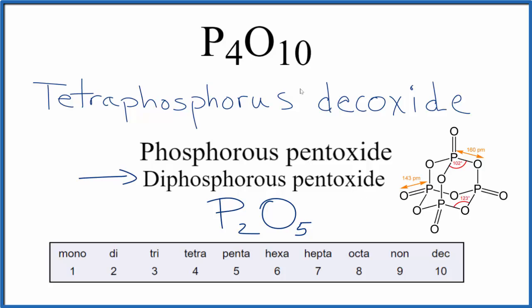Because of this historical context, you'll often hear this called phosphorus pentoxide or diphosphorus pentoxide. All of these are the same molecule, P4O10. This is Dr. B with the name for P4O10. Thanks for watching.